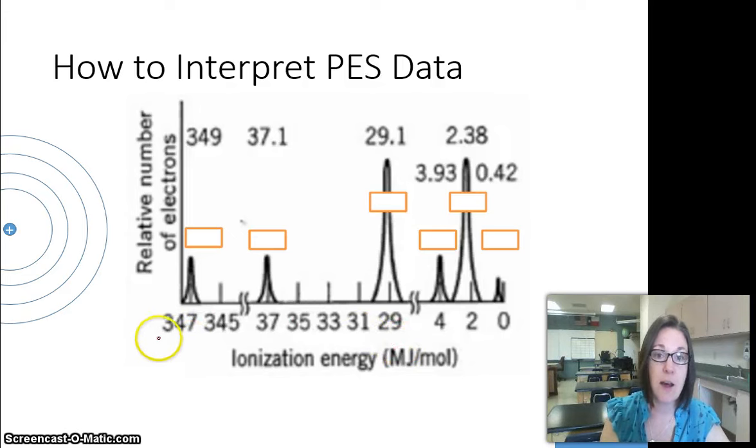This starts with our largest value, and we get lower and lower as you move to the right. So the electrons that require the most energy to be removed are your first ones on the chart, and the ones that require the least energy to be removed are farthest over to the right.